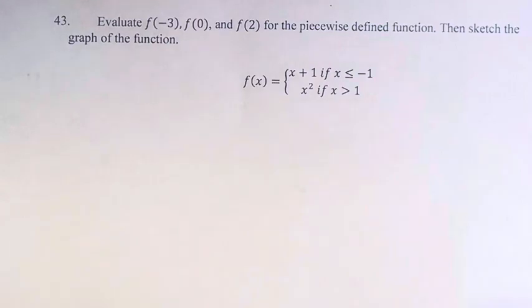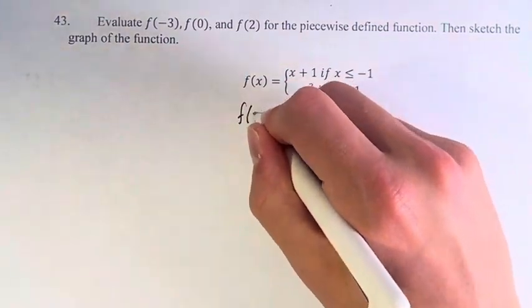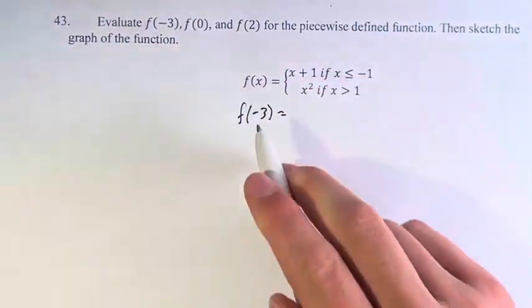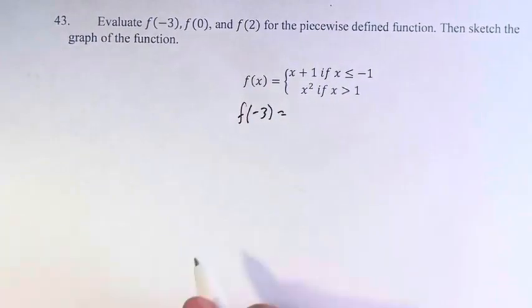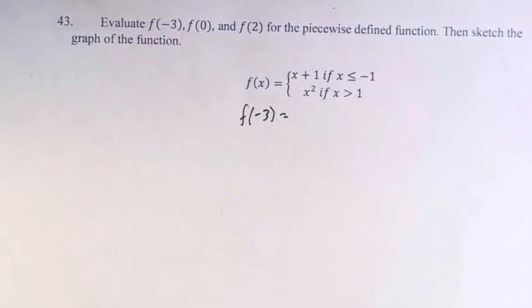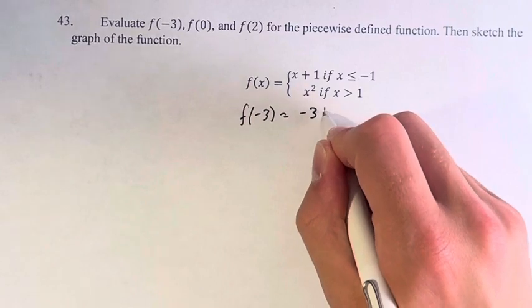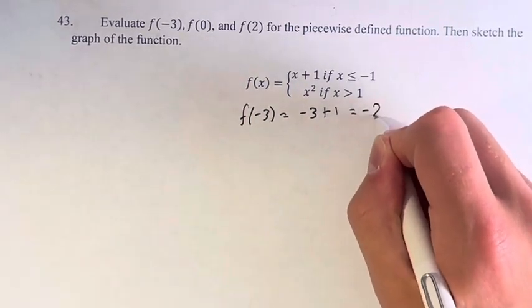So let's first find these values. f of negative 3. Negative 3 is less than or equal to negative 1, therefore we have to use x plus 1. Therefore we do negative 3 plus 1, which is negative 2.